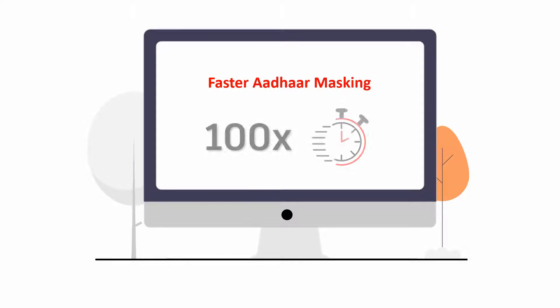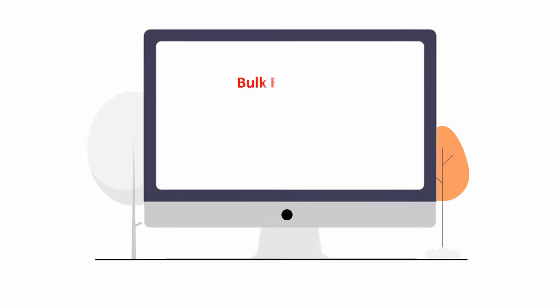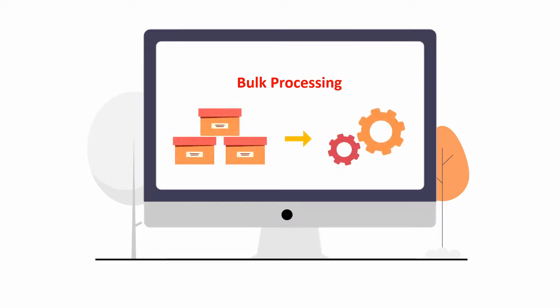It is 100 times faster at masking Aadhaar cards compared to what manually could take a huge amount of time and manpower. Aadhaar Masking Utility also comes with a bulk processing feature, wherein a huge number of images can be masked with a proper schedule and multiprocessing.